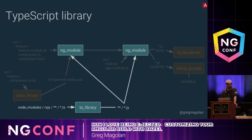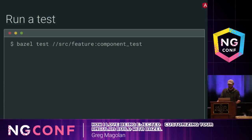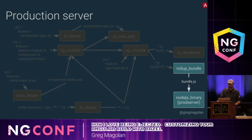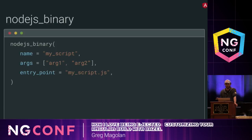To run a karma test, we can use the ts-web-test rule. Here, the ts-web-test rule depends on both ts-library, which compiles the test specification, and the ng-module, which contains the component under test. To actually run a test, you would use the Bazel test command followed by the label of the test you want to run — Bazel will build and execute this test and then report on its exit status. Finally, we need a rule to run an HTTP server to serve up the production bundle so we can ship it to the browser. For this, we can use the Node.js binary rule, which runs an arbitrary script using Node.js. For the production server, we can run the HTTP server pulled from npm — but in general the Node.js binary rule can be used to run any JavaScript file with Node.js using Bazel.